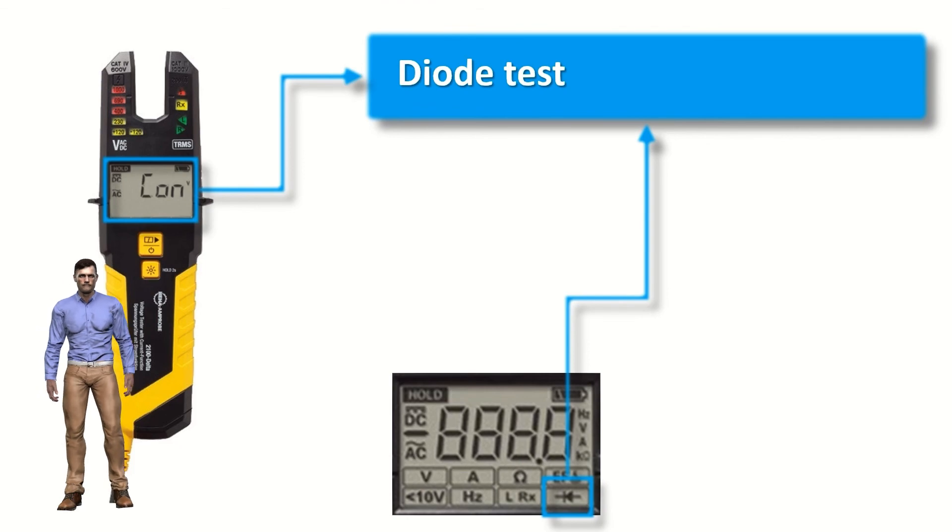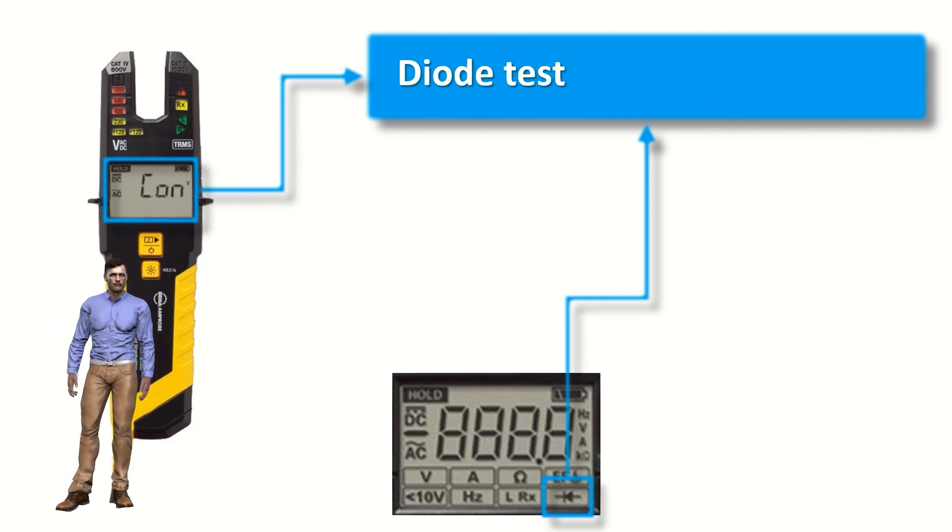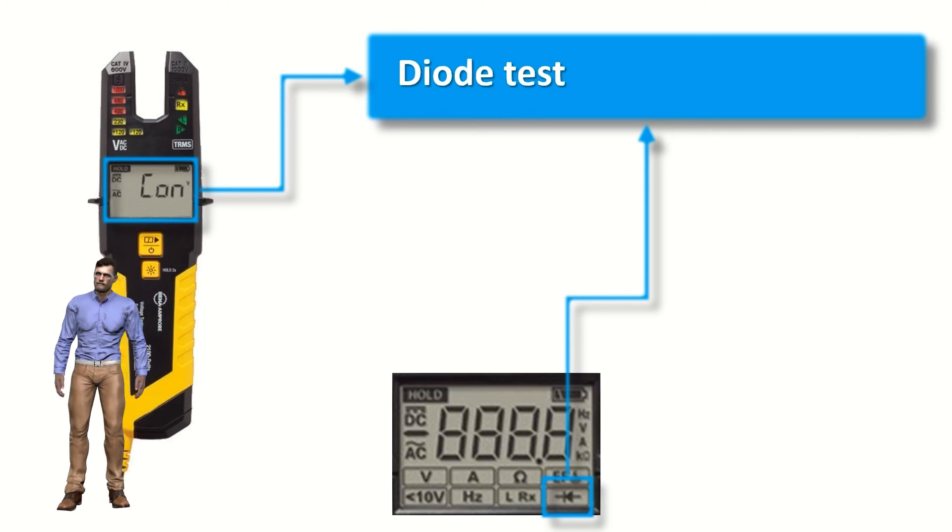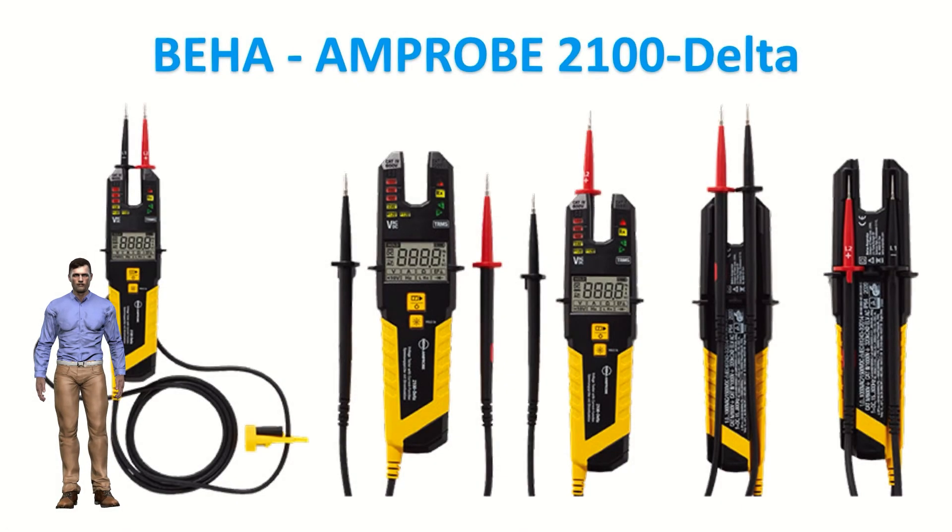Finally, the last function that we can select is the diode test, used to verify the integrity of diodes, for example in rectifier bridges for rectifying AC voltage into DC voltage. As you can see, this Amprobe 2100 delta, open clamp voltage and current measurement tester, can be very practical in the day-to-day measurements carried out by many electrical technicians.